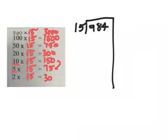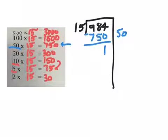Now I look over here, what number is close to but not over 984? And that would be right here, 750. And how many 15s is that? It is 50. So I put 50 over here, and 50 times 15 is 750. And I subtract, and I get 234.